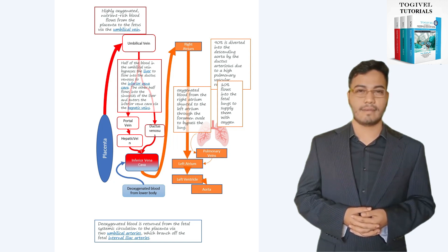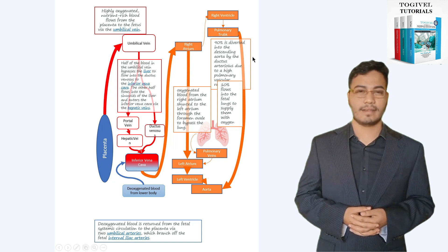While the less oxygenated blood coursing along the lateral wall of the inferior vena cava enters the right atrium and is deflected through the tricuspid valve to the right ventricle.